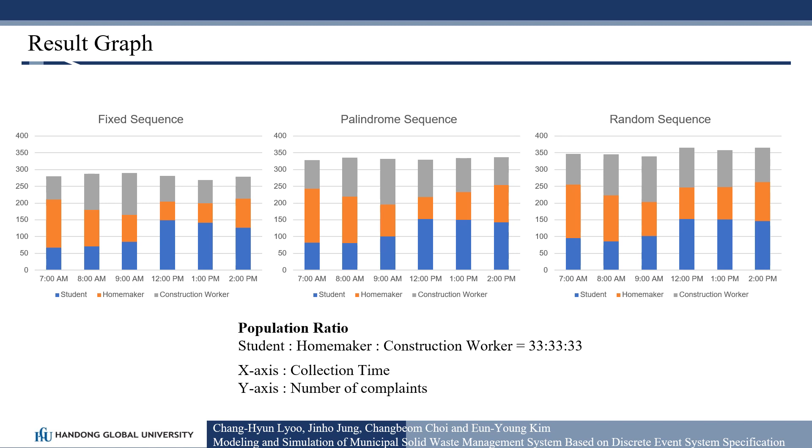Single-person households were assumed, and each experiment was conducted 30 times to measure the average number of complaints from residents concerning each waste collection strategy. The departure time of construction worker, student, and homemaker is 6.22 am, 7.58 am, and 1 pm respectively.